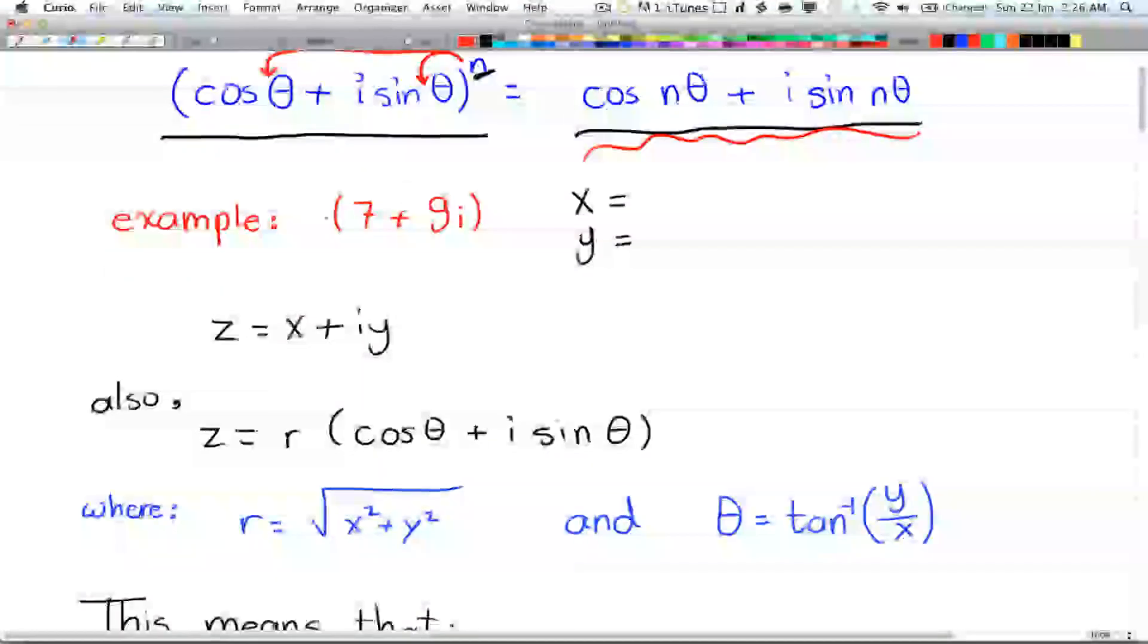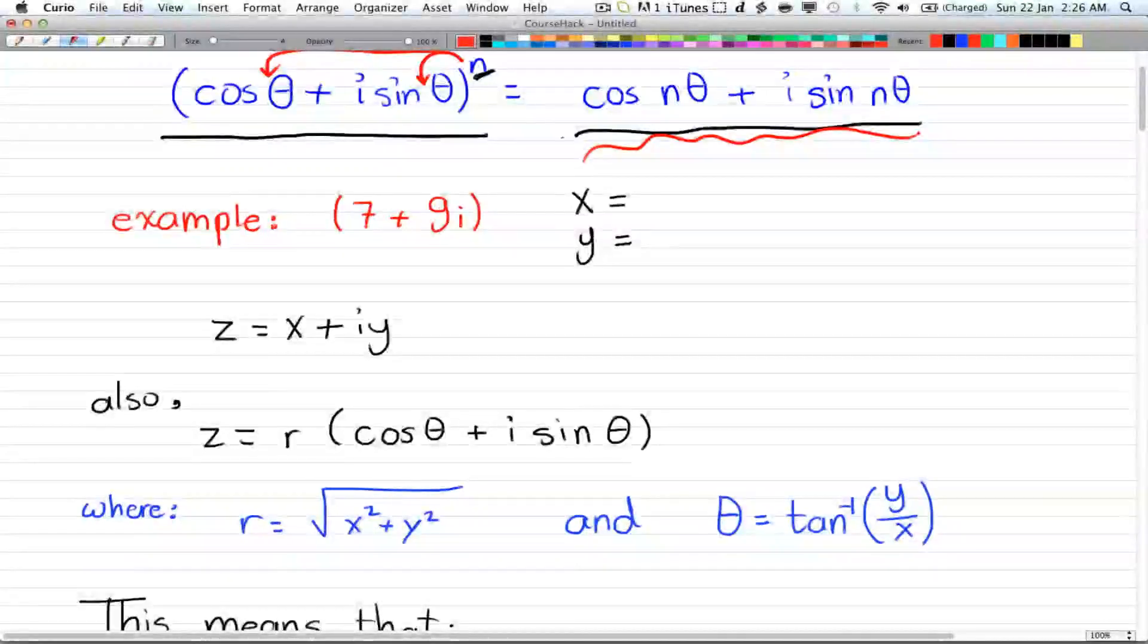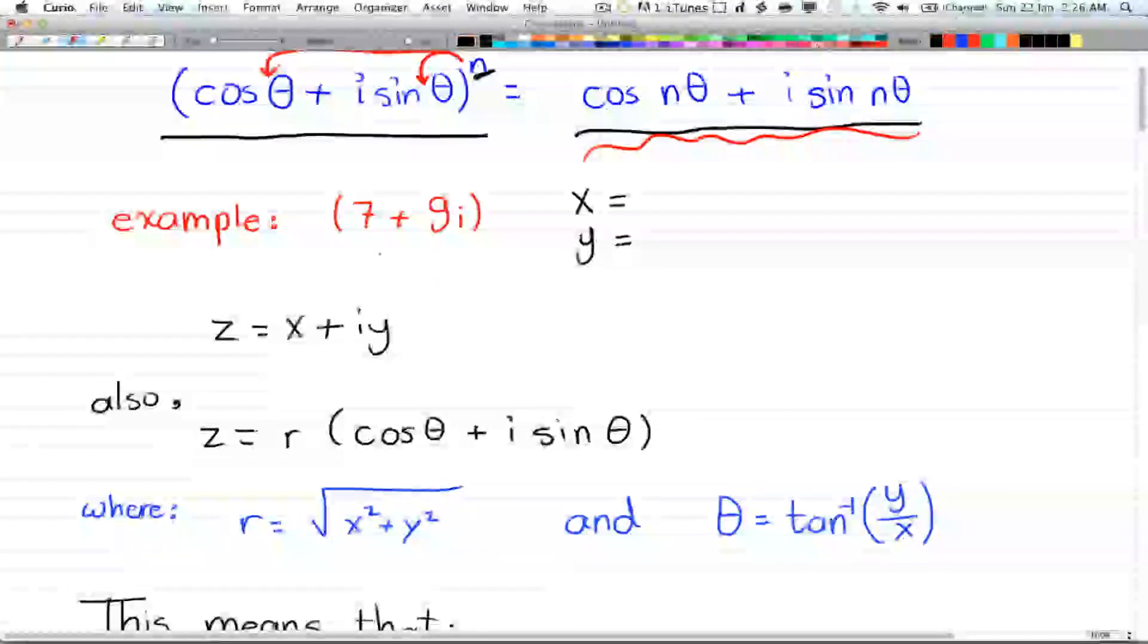So let's take an example. We have 7 + 9i. This is a root. So we got this as a root of an equation.